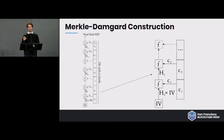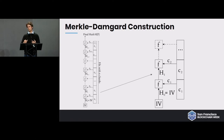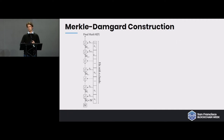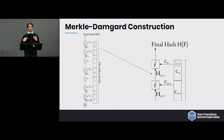Let's zoom in at the very beginning. I take chunk c1 and the IV together, put them into the compression function F, and that gives me h1 — the intermediate state of the hash function. I then take h1 and c2 and put them in the compression function, giving h2. At the end, after processing up to the very last chunk cn and intermediate state h(n-1), I get the final hash of the file.